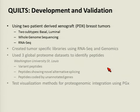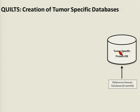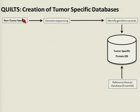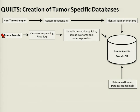To develop and validate our QUILTS pipeline, we used two patient-derived xenograft breast tumors from two different subtypes: a basal-like and a luminal-like. They have already undergone whole genome sequencing and RNA-seq, and using this information we created tumor-specific libraries. We start with the reference human Ensembl database, then use genome sequencing from the non-tumor sample to identify germline variants and incorporate them. We then use genome sequencing and RNA-seq from the tumor sample to identify alternative splicing, somatic variants, and novel expression, incorporating these into our database as well.